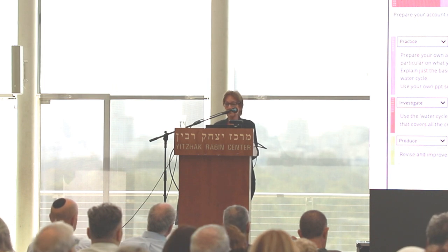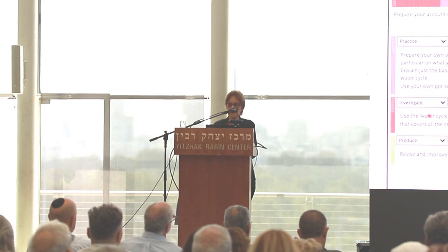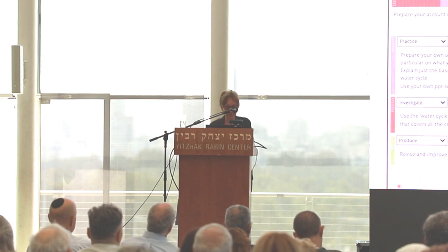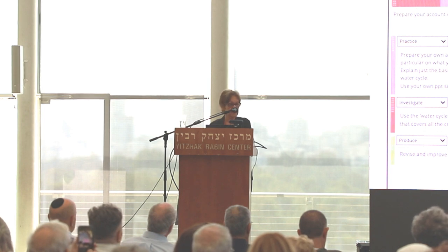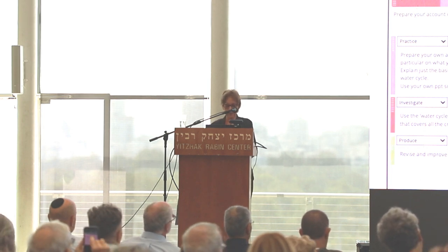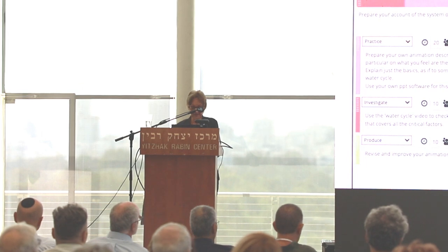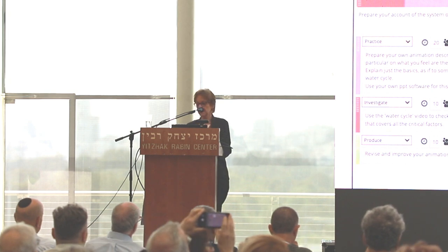Students begin by preparing their own animation to describe the water cycle using their PowerPoint software. This is assigned 20 minutes — it's an individual task, the teacher is not present, and they're not using the internet. In the next activity, they choose the investigate or inquiry learning type — using a video to check that they've done a good description, then going back in the produce activity to refine what they've done. This lasts 10 minutes, again individual. The second teaching-learning activity is more elaborate: students come together in groups of three — first for 20 minutes, then discussing for 20 minutes, then working together to produce a screencast.